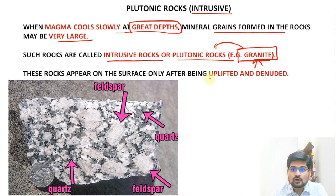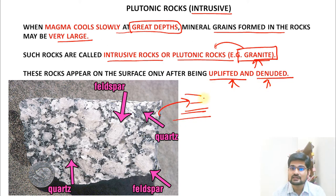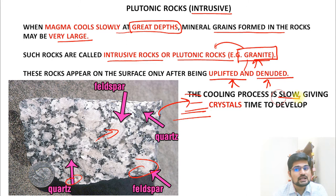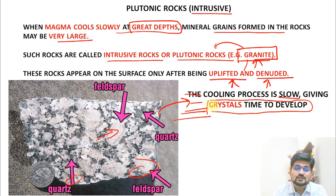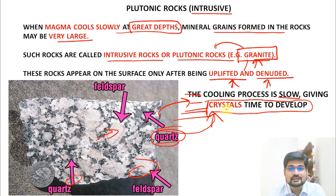Granitic rocks appear on the earth's surface only after upliftment or denudation. Minerals like quartz and feldspar are part of the grains in these rocks. The slow cooling process gives rise to the crystalline nature of plutonic rocks, which is why we observe rock crystals — quartz crystals are formed due to this gradual cooling.